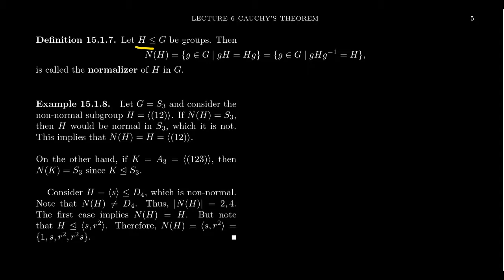So what is a normalizer? Suppose we have a subgroup H inside of some other group G. We define its normalizer, commonly denoted as N of H. This is going to be the set of all elements of the group such that the left coset coincides with the right coset. And another way of phrasing it is that we want all the elements of the group such that if you conjugate the subgroup by G, you get back H again.